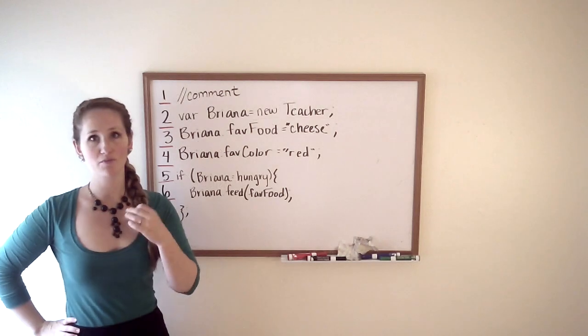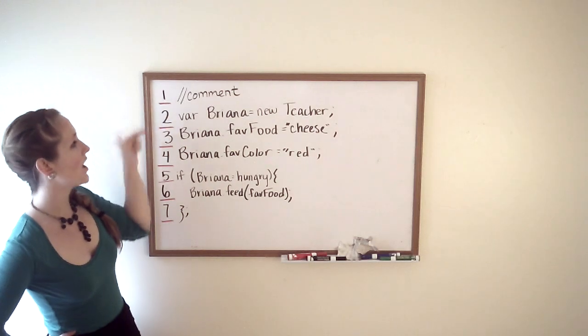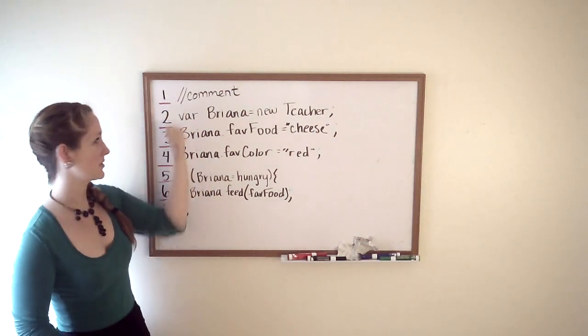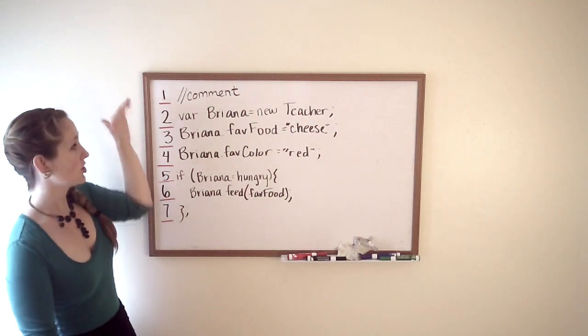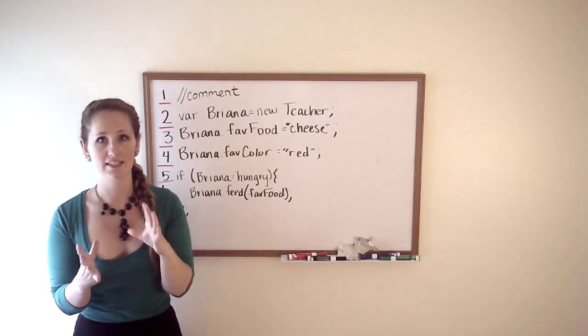Talking about how a computer looks at code, specifically JavaScript. The computer looks at code one line at a time. As you're writing code, you're going to notice these numbers on the left-hand side. The computer will literally go down line by line, making sense of what each line has to say.